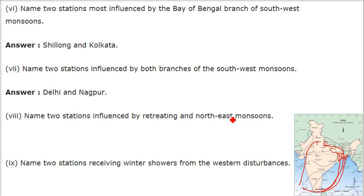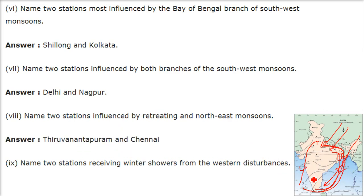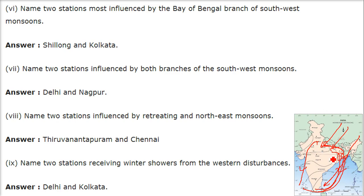Name two stations influenced by retreating and North East Monsoon. So this is the North East Monsoon — North East Monsoon and the retreating monsoon. The answer is Thiruvananthapuram and Chennai. Name two stations receiving winter showers from the Western disturbances — Pashchami Viksho. The answer is Delhi and Kolkata.